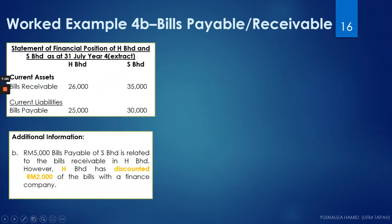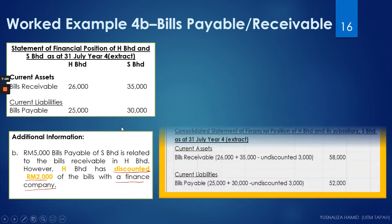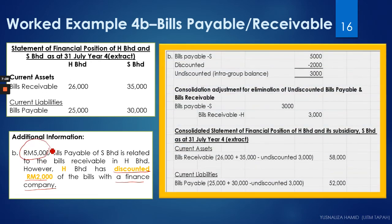Now the second scenario: bills payable of S relate to bill receivable in H. You are informed the amount being discounted is 2,000, discounted with a finance company. To find the undiscounted bills: bills payable of S is 5,000, the amount being discounted is 2,000, so that leaves 3,000 as the undiscounted bill. For the adjustment, we do the elimination of the undiscounted intercompany bills — debit the bills payable of S and credit the bill receivable of H with 3,000.